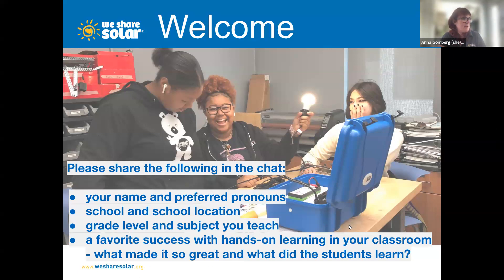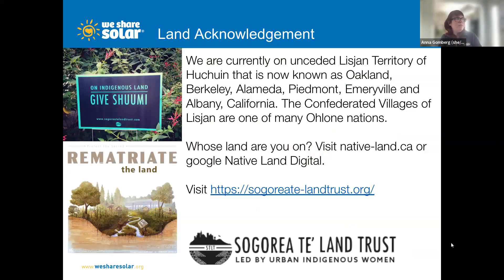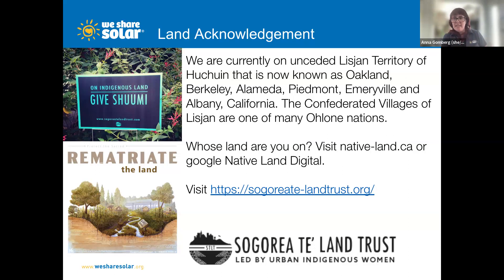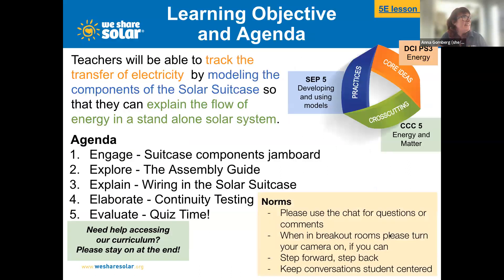I want to briefly make a land acknowledgement. Ali and I are both in the Bay Area, currently on unceded Lisjan territory of Huichin, now known as Oakland, Berkeley, Alameda, Piedmont, Emeryville, and Albany, California. The Confederated Villages of Lisjan are one of many Ohlone nations. There's a link in the slides — Ali, can you copy it? It's for the Sogorea Te' Land Trust, a local women-led indigenous organization working to rematriate the land. If you want to know about the land you're on, search Native Land Digital.